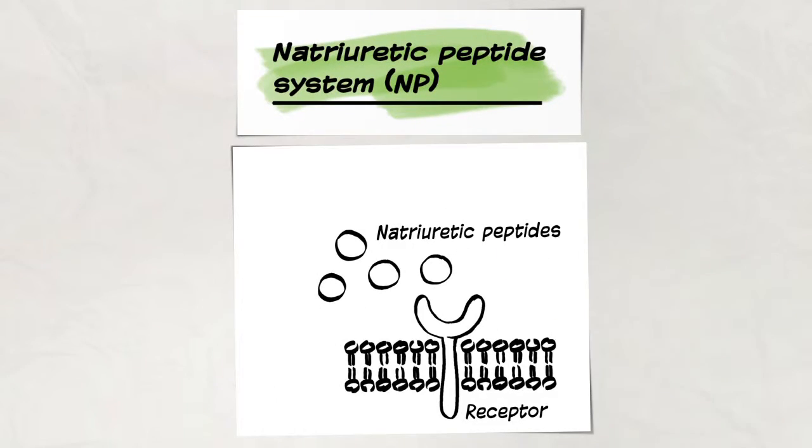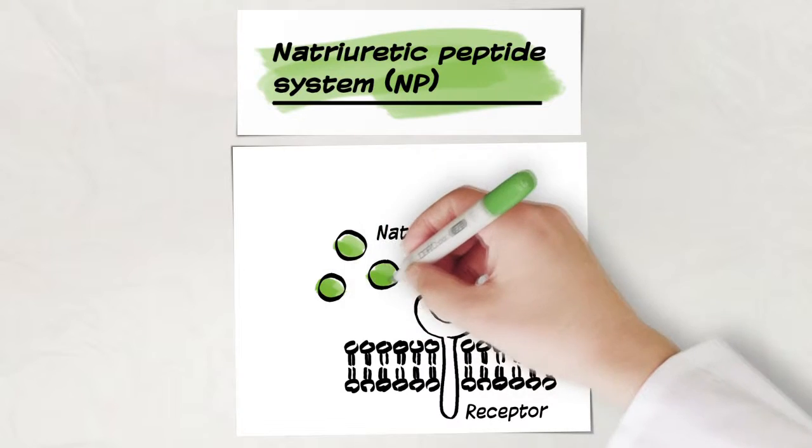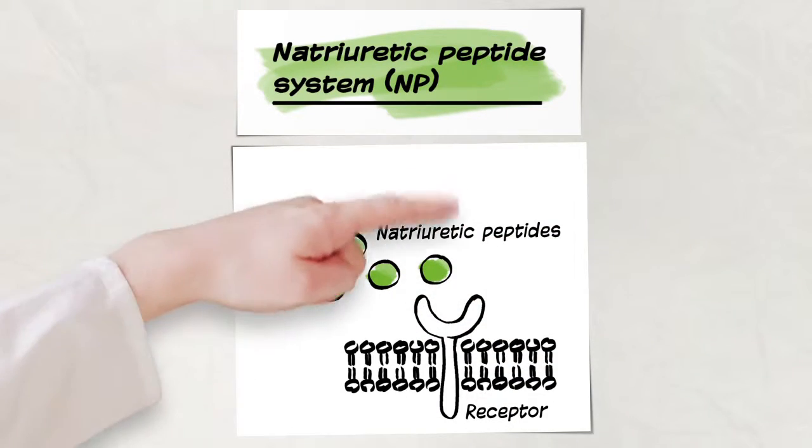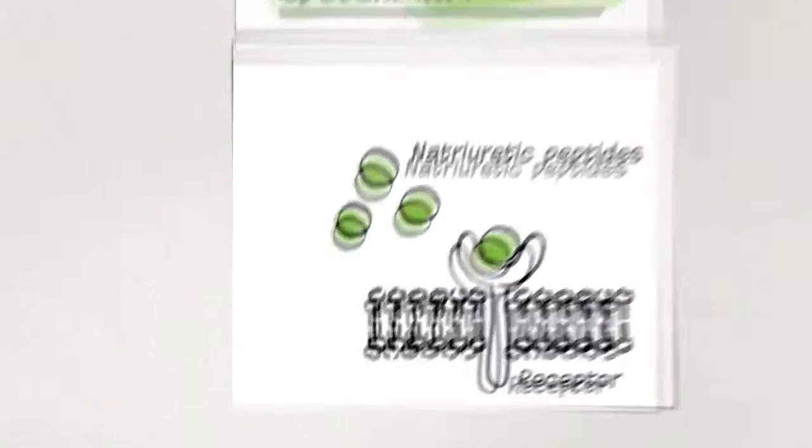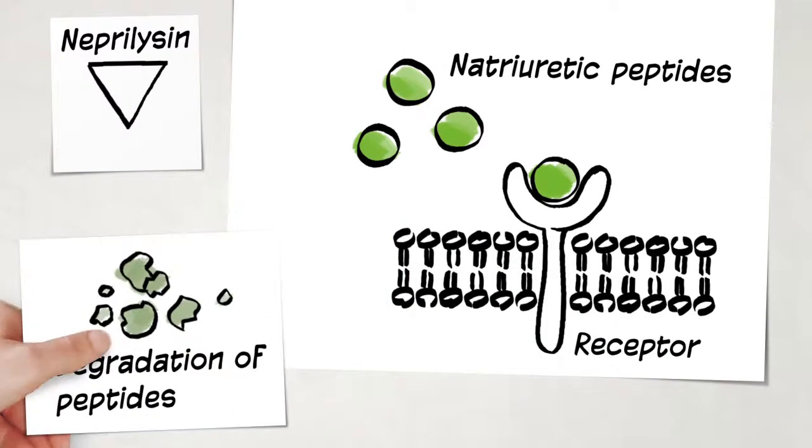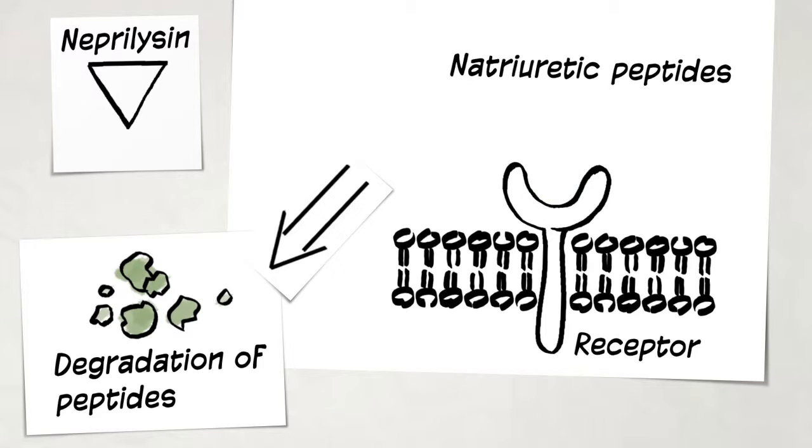Natriuretic peptides are released directly from the heart or the vessels to induce vasodilation and thus unload the heart. As the natriuretic peptides are degraded by the enzyme neprilysin, the beneficial effects of the natriuretic peptide system are limited.